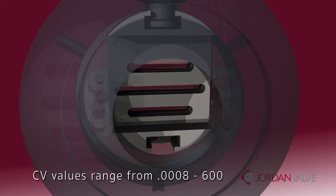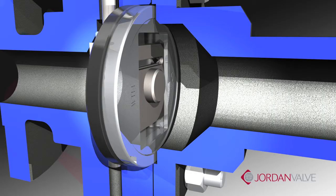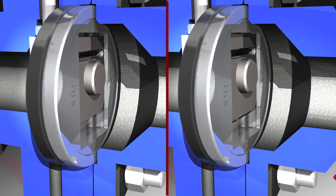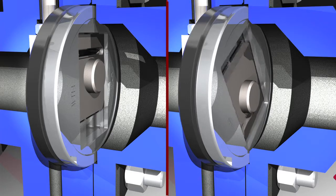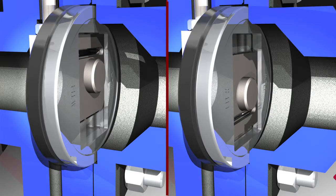CV values can range anywhere between 0.0008 to as high as 600 depending on body size and valve type. With any Jordan sliding gate valves, the action can be changed from reverse, air to open, to direct, air to close, by rotating the seat set 180 degrees.